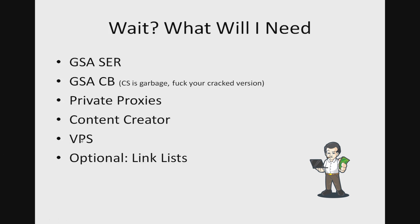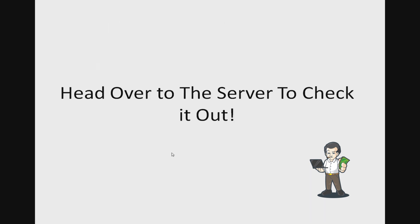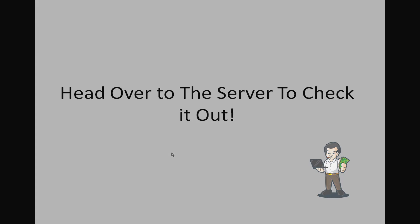You'll need a VPS or dedicated server for running the software 24/7 so you don't run up your electricity bill. Optional are link lists — those supplement your GSA because you're scraping Google and other search engines to find links to post to, and link lists are already verified and known to work. That's the first part of this tutorial; part two will cover the settings, so be sure to check that out. This is Dylan from AffiliateHustle.com — see you then.